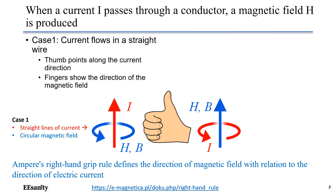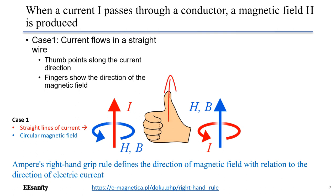They have one thing in common: a magnetic field H is produced when a current I passes through a conductor. For case 1, assume you have a current I shown as a red arrow pointing to the top. You point the thumb of your right hand along the conductor in the same direction of the current flow, and your fingers will wrap themselves around the conductor in the direction of the magnetic field H, as shown in the blue circle. Note that the magnetic field density B is in the same direction of H. As a result, a straight line of current will generate a circular magnetic field, as shown in the first case.